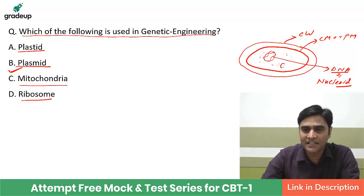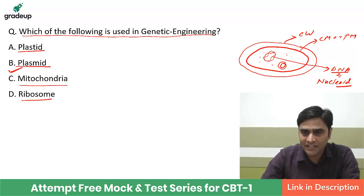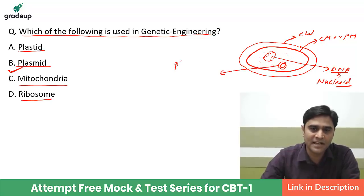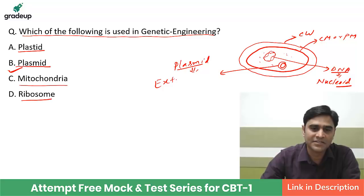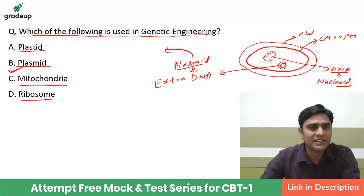But extra DNA is also present along with this main DNA, and that extra DNA is called plasmid. So what is plasmid? It is extra-nuclear DNA. This extra DNA is called plasmid, and this DNA is used in genetic engineering.